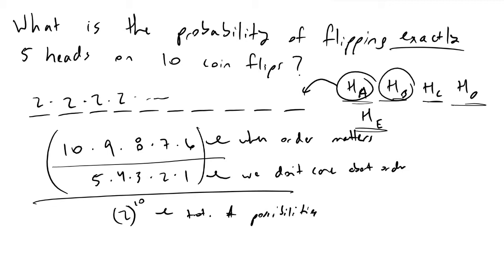What we find at the end of the day, once you plug in these numbers, is that we get a value equal to 0.246. This means that we have a 24.6% chance of getting exactly five heads on 10 coin flips.